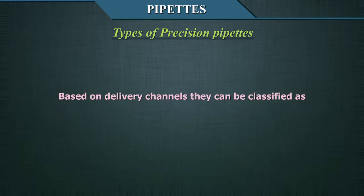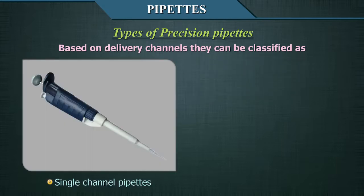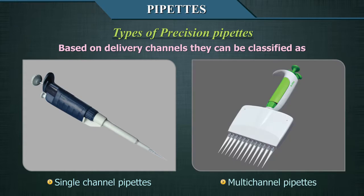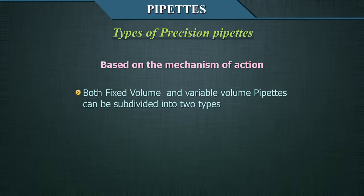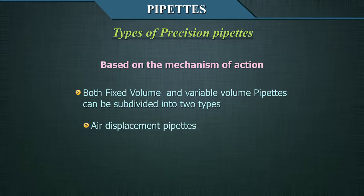Based on the delivery channels, pipettes can also be classified as single channel or multi-channel pipettes. Based on the mechanism of action, both fixed volume and variable volume pipettes can be subdivided into two types: air displacement pipettes and positive displacement pipettes.